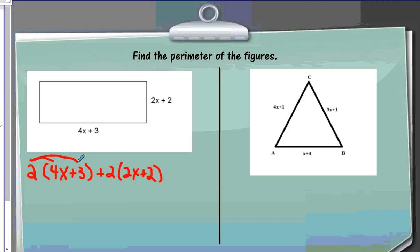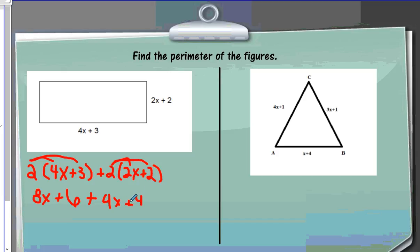Using the distributive property on both expressions: 2 times 4x is 8x, and 2 times 3 is 6. Then for the next expression, 2 times 2x is 4x, and 2 times 2 is 4. Then I combine my like terms: 8x plus 4x gives me 12x, and 6 plus 4 gives me 10. So my answer is 12x plus 10.